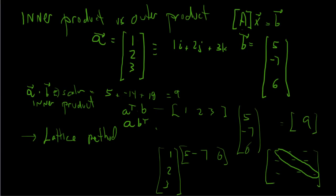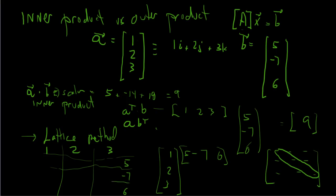Let me squeeze out a little more space and talk about how lattice-wise this works. I can do 1, 2, 3 times 5, minus 7, and 6 using the lattice method — it's just a graphic method. So: 1 times 5 is 5, 2 times 5 is 10, 3 times 5 is 15. Minus 7 times 1 is minus 7, minus 7 times 2 is minus 14, minus 7 times 3 is minus 21. 6 times 1 is 6, 6 times 2 is 12, and 3 times 6 is 18.